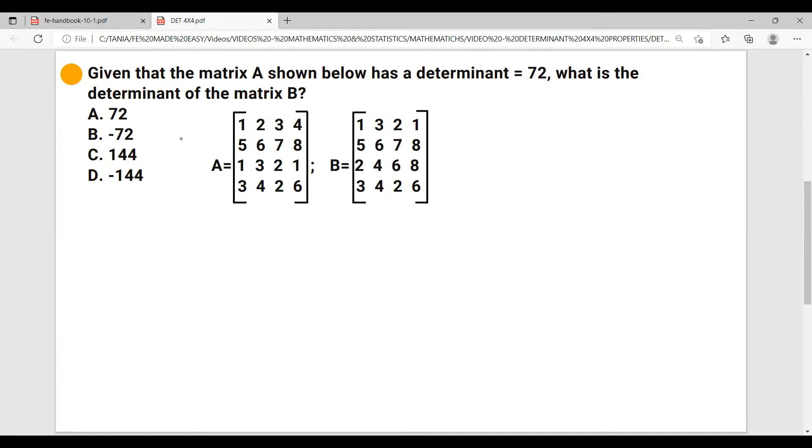And then also the fourth row, it's also equal. And then notice how the third row from matrix A is interchanged in matrix B and it's moved to the row number one.